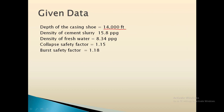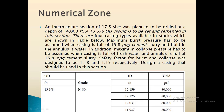The given data: casing depth is 14,000 feet, density of cement slurry is 15.8 ppg, and density of fresh water is 8.34 ppg. The collapse safety factor is 1.15 and burst safety factor is 1.18. For the maximum burst pressure, the casing is full of 15.8 ppg cement and the annulus contains water. For the maximum collapse pressure, the casing is full of fresh water and the annulus is filled with 15.8 ppg cement slurry.